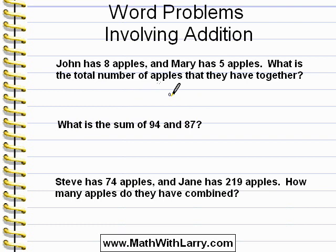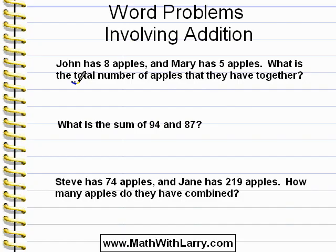John has eight apples, and Mary has five apples. What is the total number of apples that they have together? Even though we're told that this involves addition, let's pretend that we don't know that these are addition problems. I'm going to look for as many keywords as I can find. Total is an important keyword, and that usually implies addition, but not always. Together kind of tells us that we're going to be combining.